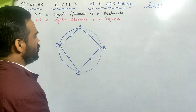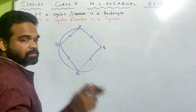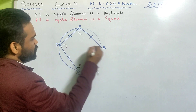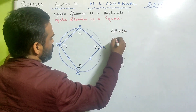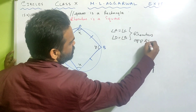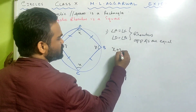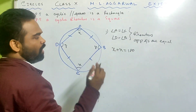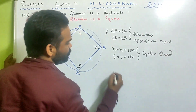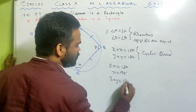ABCD is a rhombus. A rhombus is nothing but a parallelogram, which means opposite angles are equal. Angle A equals angle C, angle D equals angle B — opposite angles of a rhombus are equal because it is a parallelogram. Now it is a cyclic quadrilateral, so X plus X equals 180 and Y plus Y equals 180 — opposite angles add to give 180. Which means 2X equals 180, so X equals 90 degrees. 2Y equals 180, so Y equals 90 degrees.